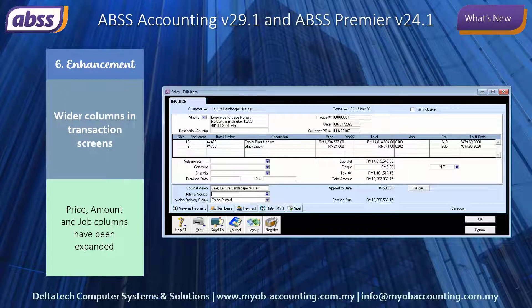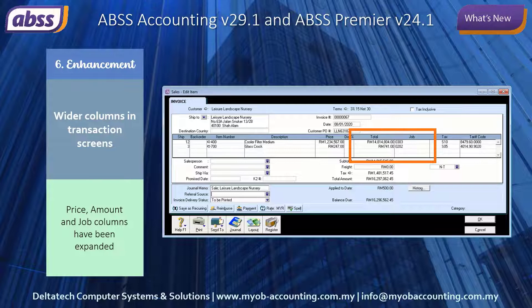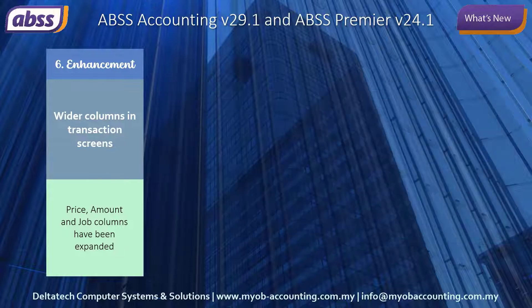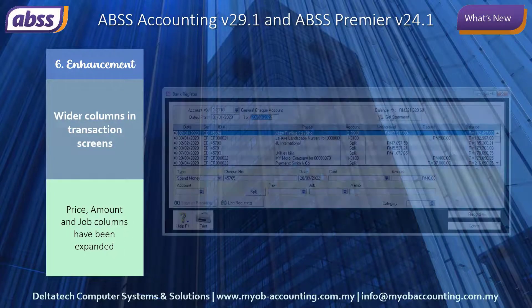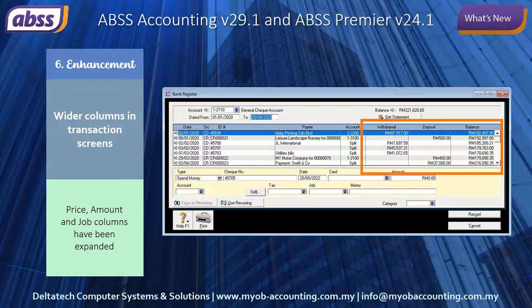For sales and purchase transactions, you now have wider price, amount and job columns to cater for larger numbers and currency symbols. The columns in the bank register are similarly wider.